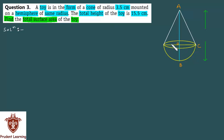The yellow color represents the hemisphere, and the white color is the cone. This is the complete figure — the cone mounted on a hemisphere. This is the toy.